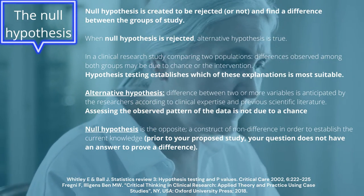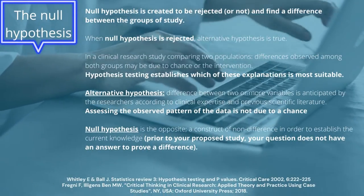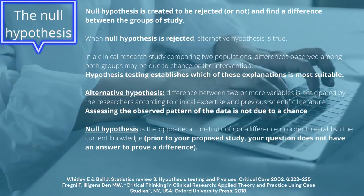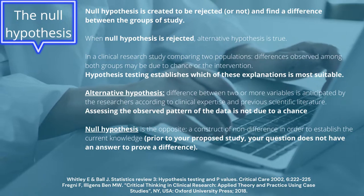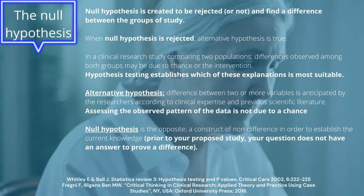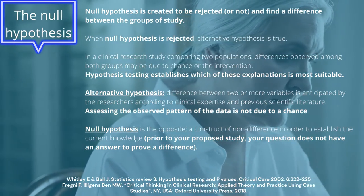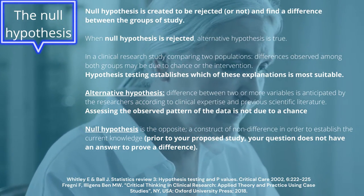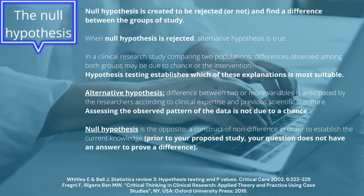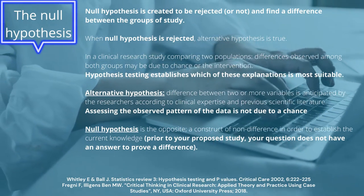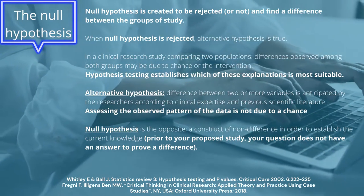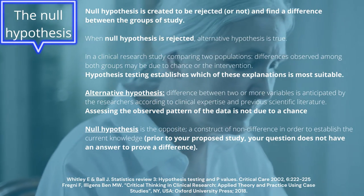In clinical research, when comparing two populations for example, whenever we find a difference among them, it may be either by chance or by the effect of a certain intervention. Hypothesis testing will establish which of these explanations is more suitable for the scenario. By definition, the alternative hypothesis is the difference between two or more variables anticipated by researchers according to clinical expertise and the previous scientific literature. This is the importance of performing a prior literature review to understand up-to-date information on the subject in order to propose an alternative hypothesis.